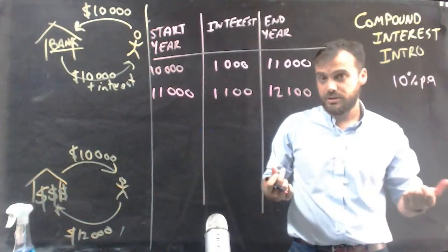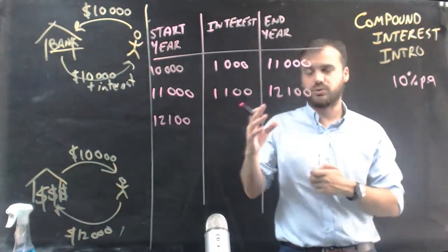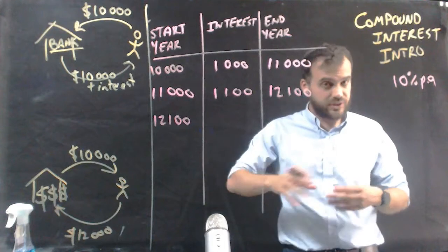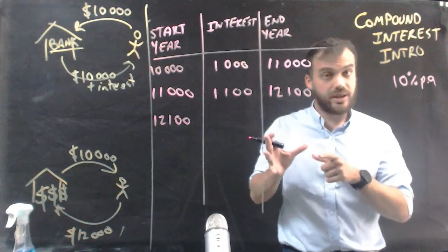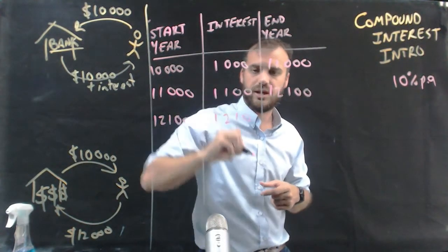Let's leave it in the bank. In the start of the third year, you'll have $12,100 in the bank. If it stays in the bank account for the whole year, they're going to owe you 10%. And 10% of $12,100 is $1,210.